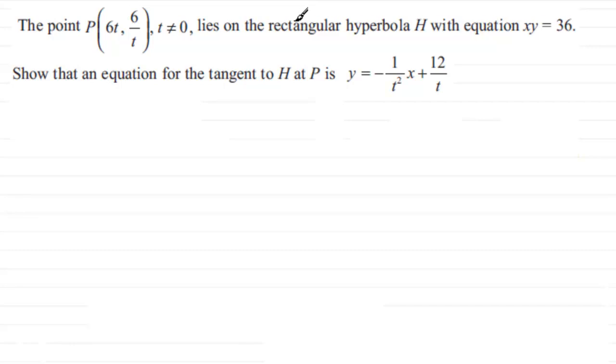It lies on the rectangular hyperbola H with equation xy equals 36. We need to show that an equation for the tangent to H at P is given by y equals minus 1 over t squared times x plus 12 over t.